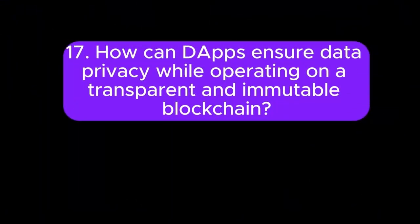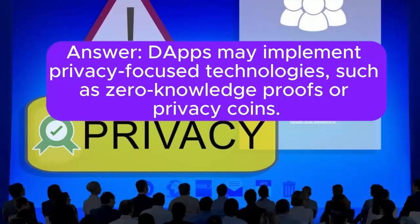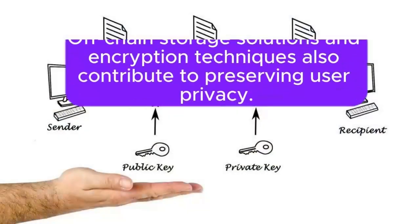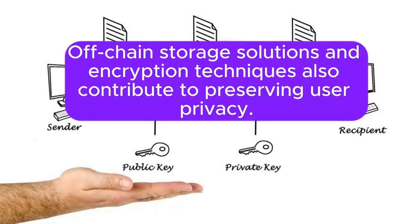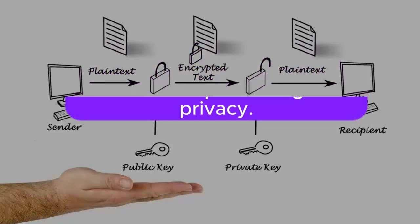17. How can DApps ensure data privacy while operating on a transparent and immutable blockchain? Answer: DApps may implement privacy-focused technologies such as zero-knowledge proofs or privacy coins. Off-chain storage solutions and encryption techniques also contribute to preserving user privacy.